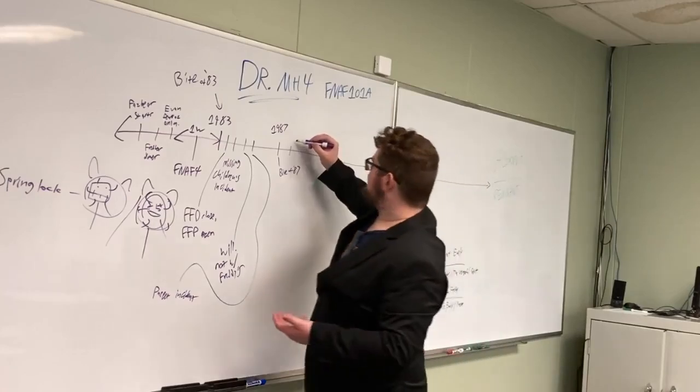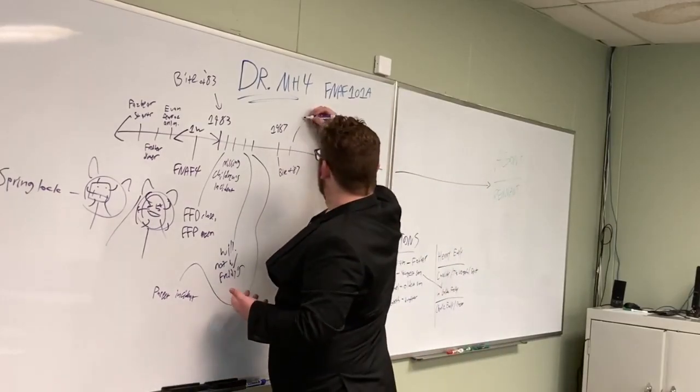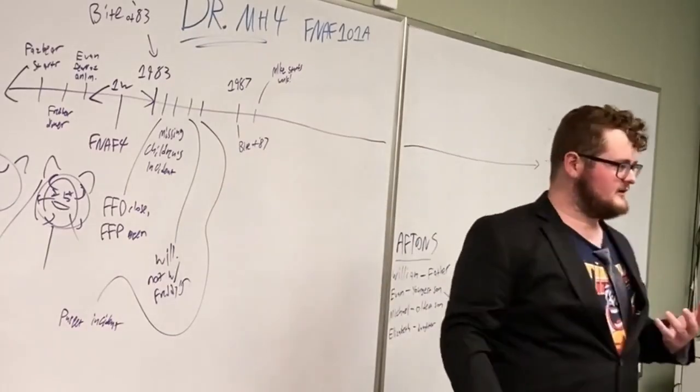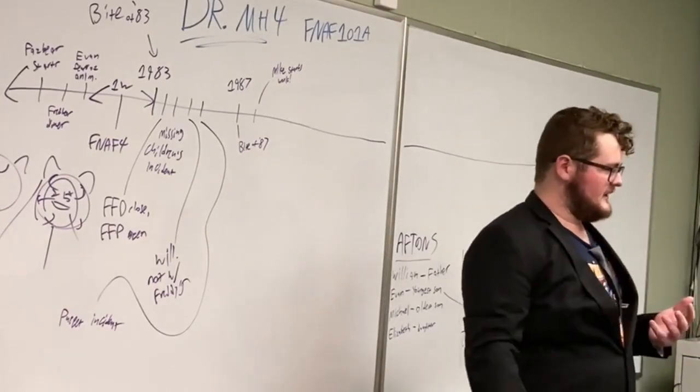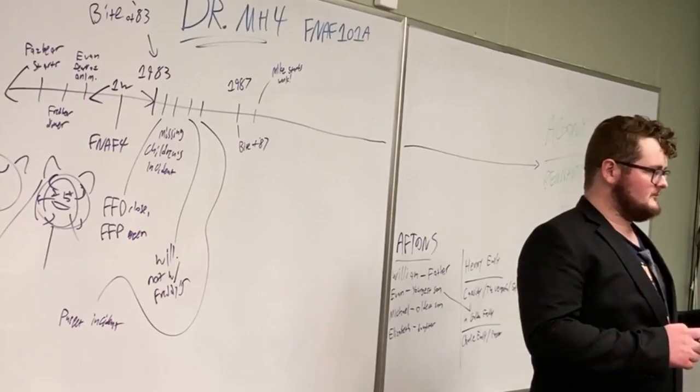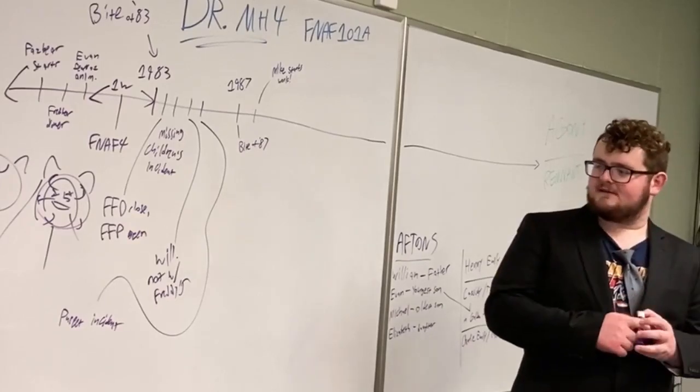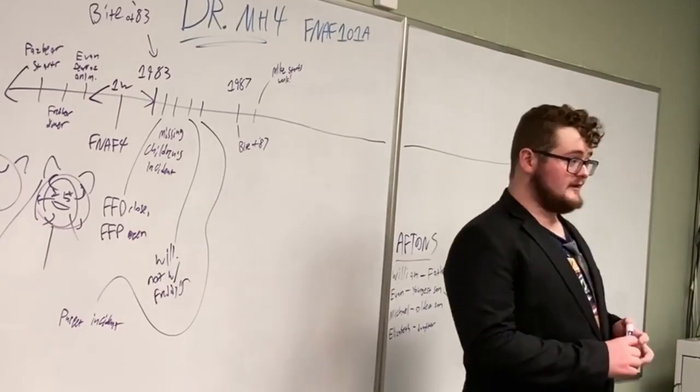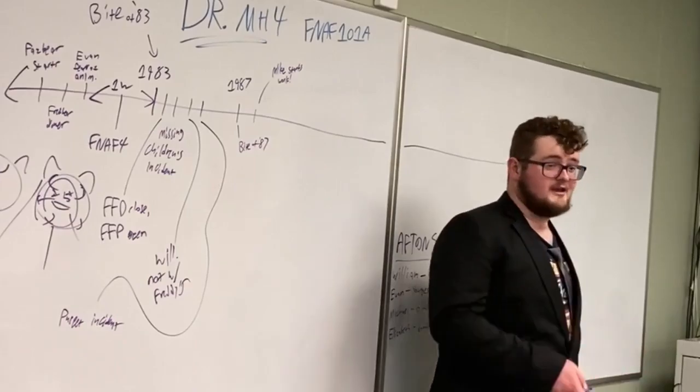So, the security guard at the FNAF 2 location is out of commission, because he just had his frontal lobe bit off. Then, a certain someone comes along, Michael Afton. He starts working at the Freddy's locations, so he can try and find William. Because at this point, William has gone missing. But why is William missing? I'm so glad you asked.